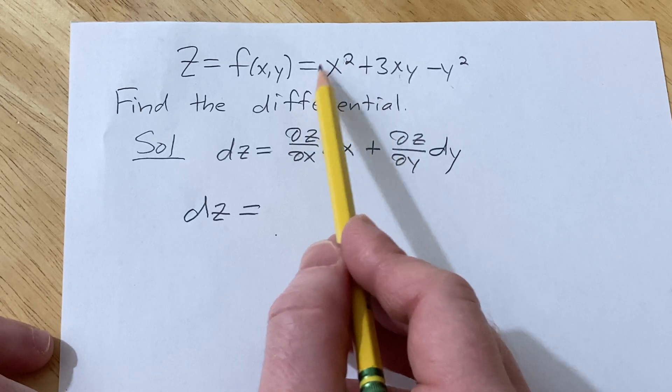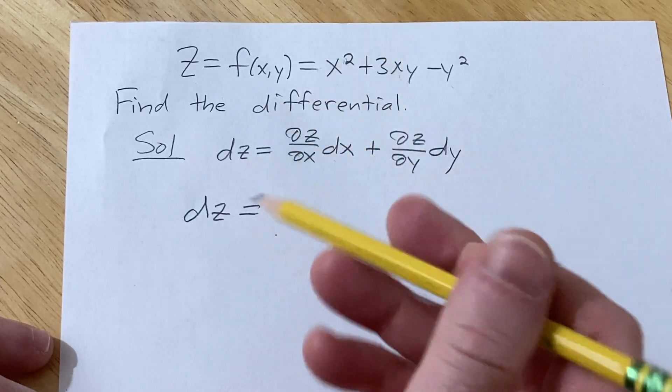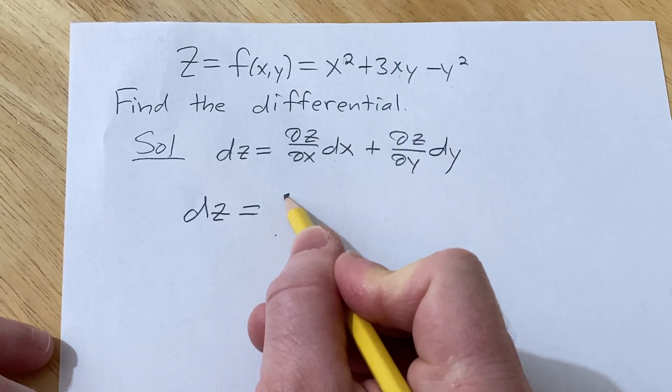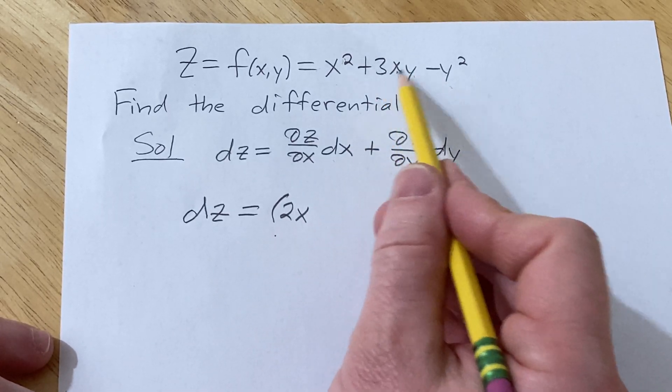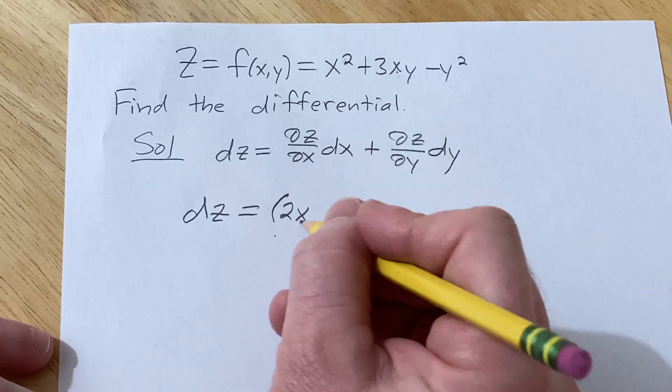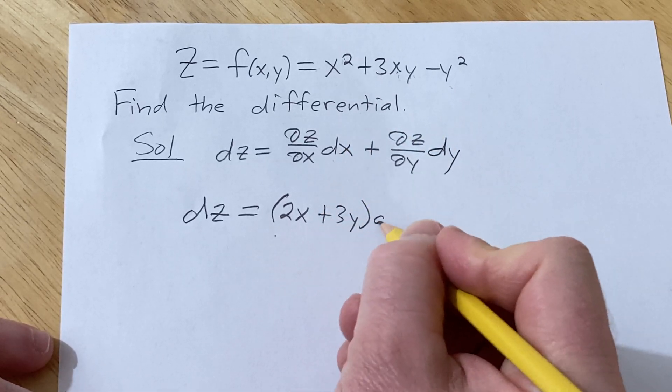So here you would get 2x, right? You would bring down the 2 and subtract 1 from the exponent. That's the power rule. I'm going to put this in parentheses. And then here, the derivative of x is 1, and the 3y hangs out. It's like a constant, so plus 3y. And then you have the dx.